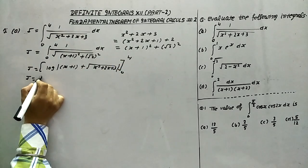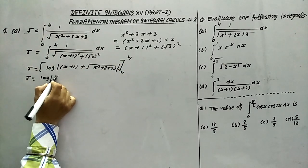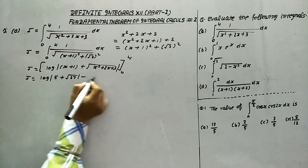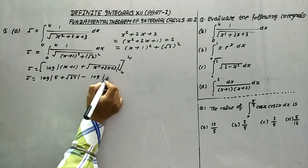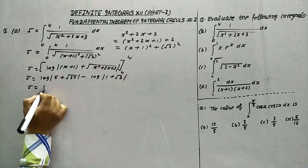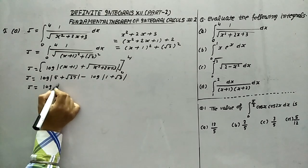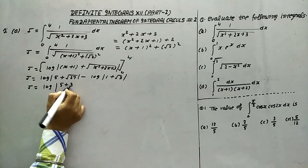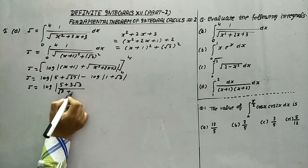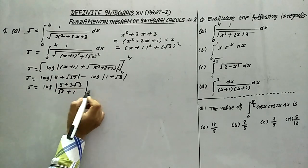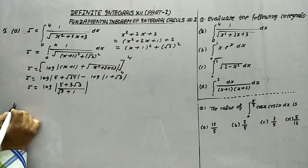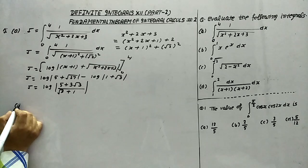Now applying the upper limit first, we get log(5 + 3√3), and for the lower limit we get log(1 + √3). Therefore I equals log of (5 + 3√3) upon (√3 + 1), because we apply the identity log m minus log n equals log m upon n.